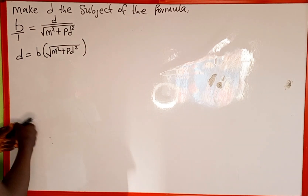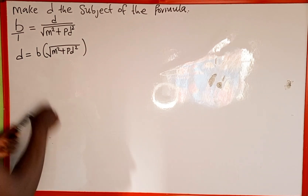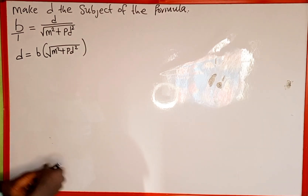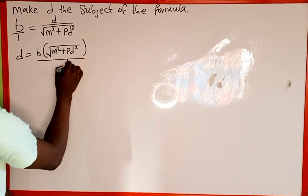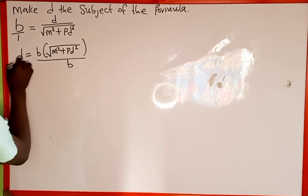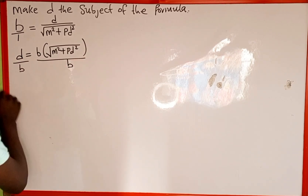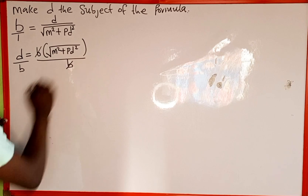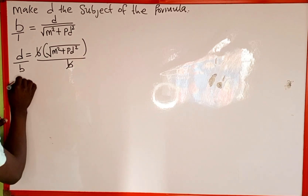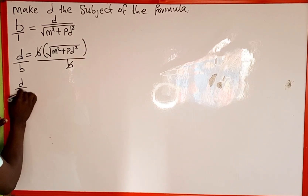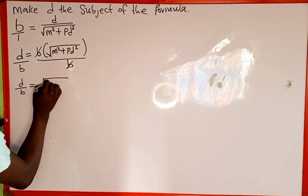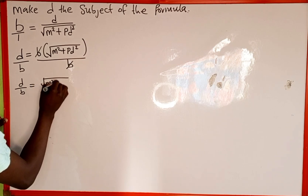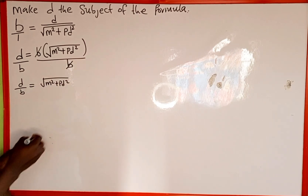The next thing we're going to do is divide through by b so that we cancel this b — dividing both the right hand side and the left hand side by b. This gives us d over b, which is equal to the square root of m squared plus pd squared.